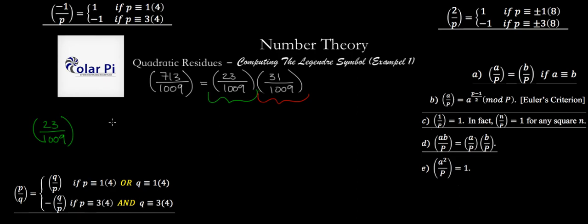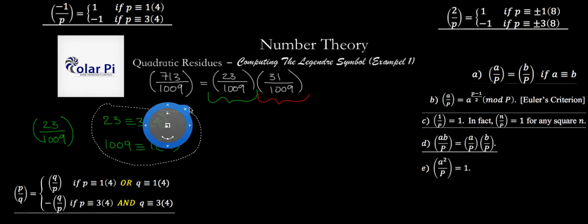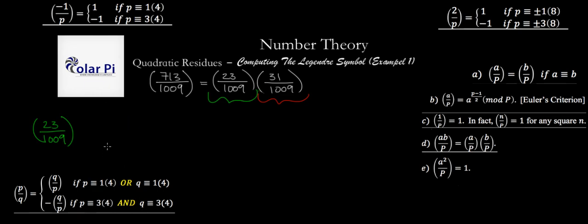And then we need to figure out what 23 is congruent to mod 4, which is 3. 23 is congruent to 3 mod 4. And we need to do the same with 1009, that is, figure out what it is congruent to mod 4. And 1009 is congruent to 1 mod 4. So we see that only one of these two numbers is congruent to 1 mod 4. So this part applies. That means P over Q is same as Q over P. So we go 23 over 1009 is the same as 1009 over 23.